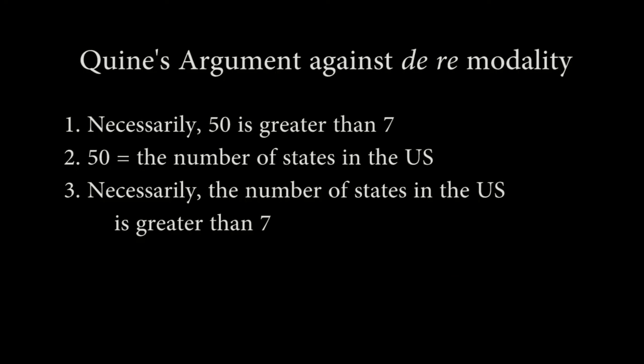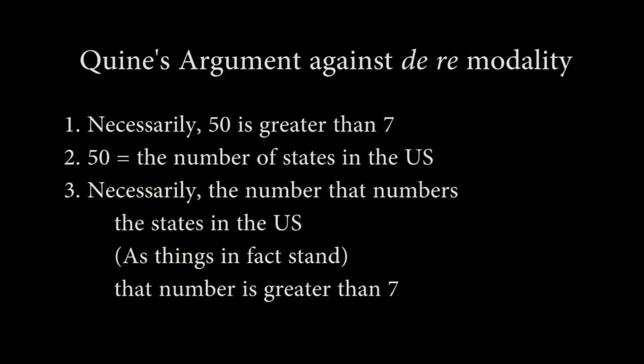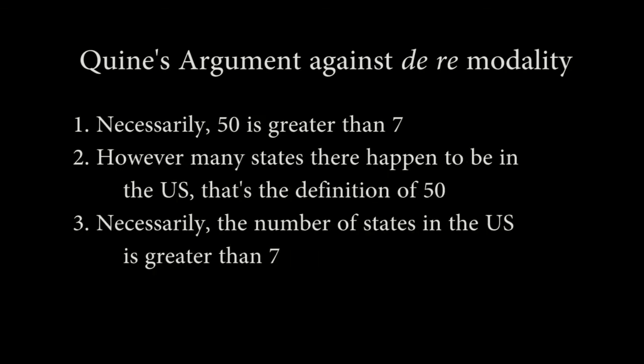It appears that the statement '50 equals the number of states' is a statement about a number, while the statement 'the number of states in the US is greater than 7' is about states. If we interpret statement 3 so that it is about numbers, then it is equivalent to: 'Necessarily, the number that numbers the states, as things in fact stand, is greater than 7' — and this is a true statement. If we instead reinterpret statement 2 so that '50 equals the number of states' is about states, then it is equivalent to: 'However many states in the US there happen to be, that's what the number 50 is' — and clearly this is false; we don't define the number 50 in terms of states. Either way, Quine's objection fails.